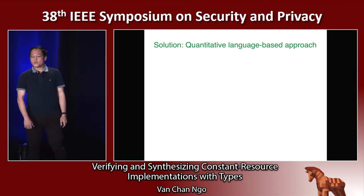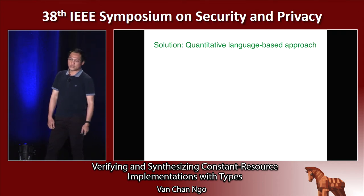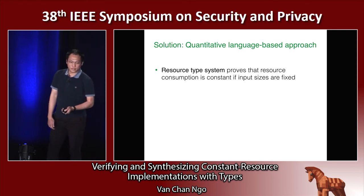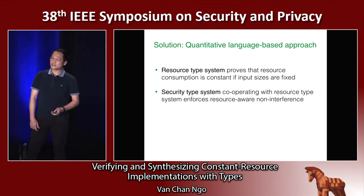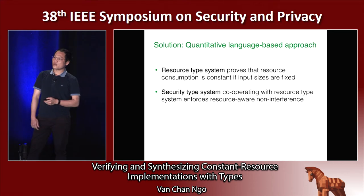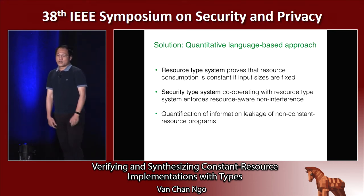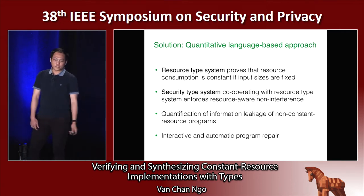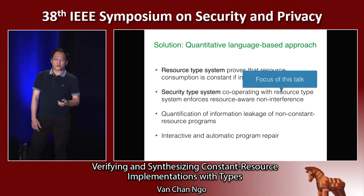In this work, we propose a quantitative language-based solution to reason about side channel attacks. First, we design a resource type system to prove that the resource consumption is constant if the sizes of the inputs are fixed. Second, we design a security type system based on the classic information flow type system that cooperates with the resource type system to enforce the resource-aware non-interference property statically. We also provide a method to quantify the amount of information leakage when the program is a non-constant resource program. And we provide an interactive and automatic program repair procedure to transform an ill-typed program into a well-typed program. In this talk, I will focus on the design of the security type system; other details can be found in the paper.